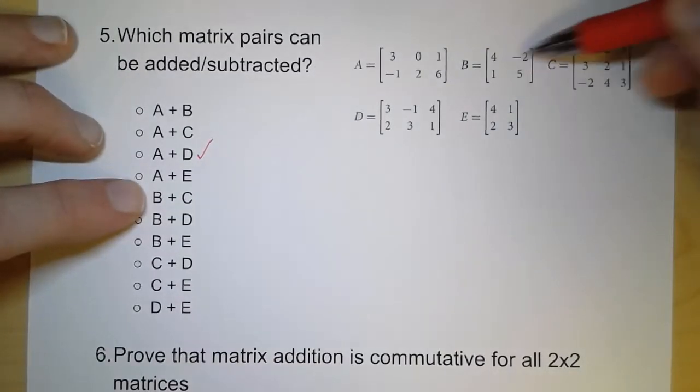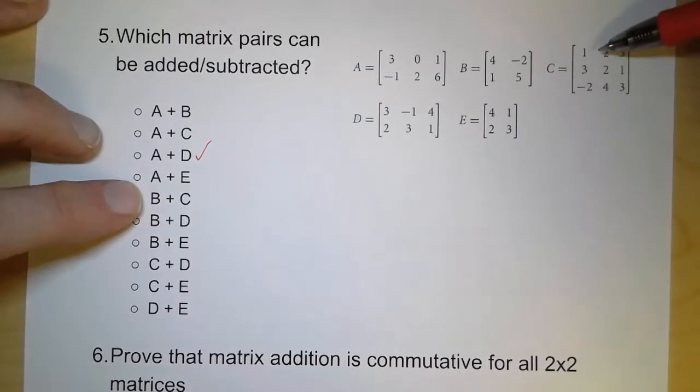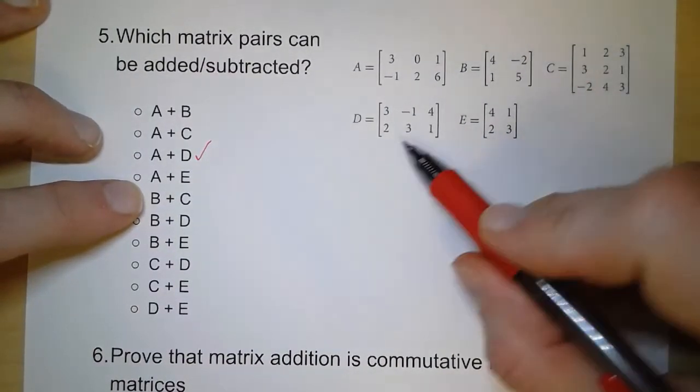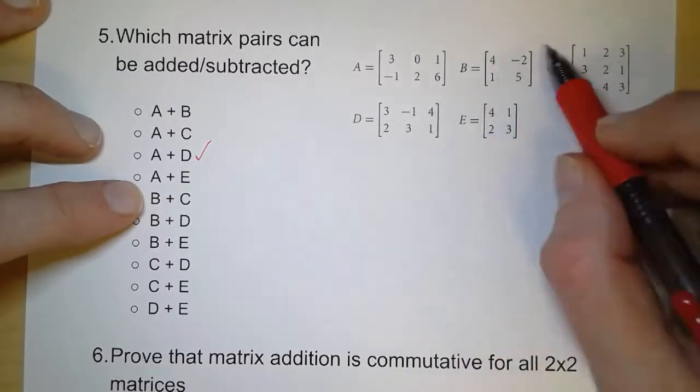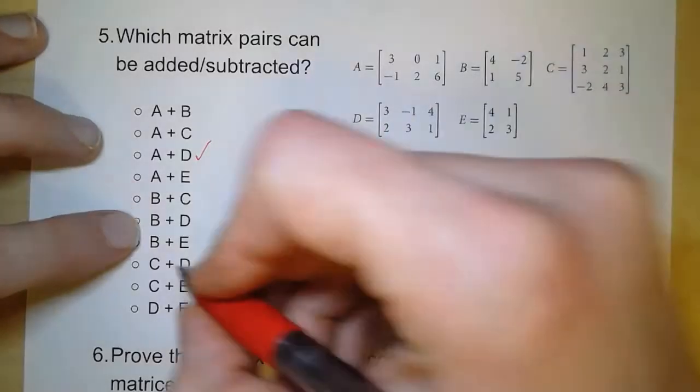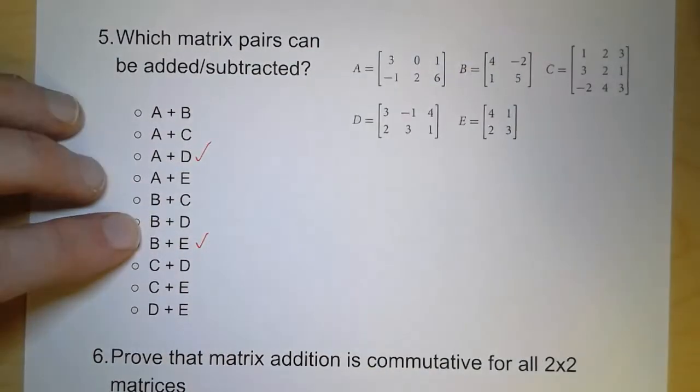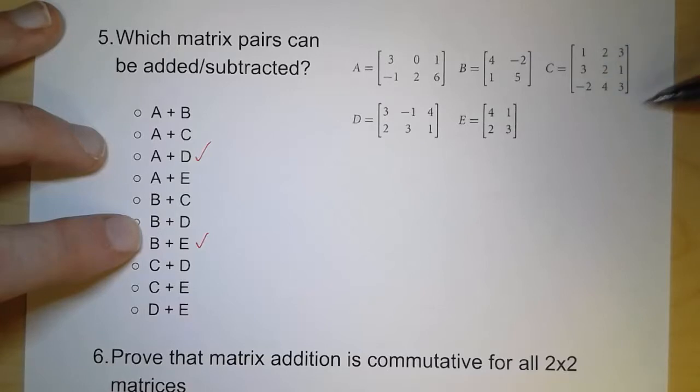B and D have the same number of rows, but different columns. That doesn't work. But B and E. Same number of rows, same number of columns. Now matrix C and matrix D. Different numbers of rows.